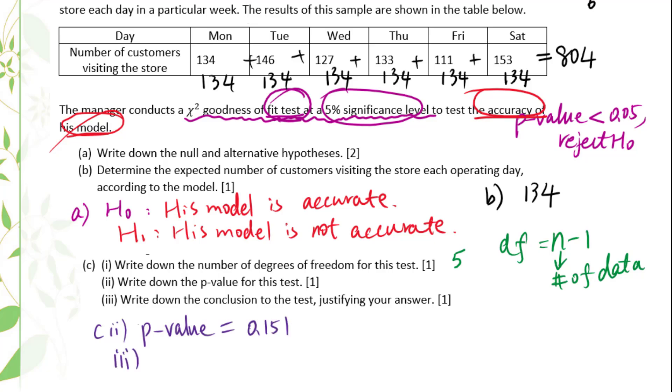Part c3, write down the conclusion to the test, justifying your answer. 0.151 greater than 0.05, which means we don't have enough evidence to reject H0. His model is accurate.